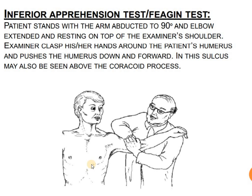Next is the inferior apprehension test, also known as Feagin's sign. The patient stands with the arm abducted to 90 degrees, with the elbow and arm resting on top of the examiner's shoulder. The examiner clasps both hands around the patient's humerus and pushes the humerus downward and forward. A sulcus may also be seen about the coracoid process, indicating inferior instability of the shoulder.